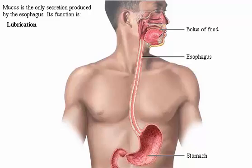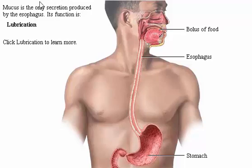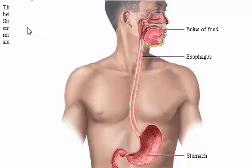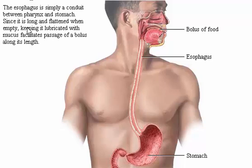Mucus is the only secretion produced by the esophagus. Its function is lubrication. Remember that the esophagus is simply a conduit between the pharynx and stomach — it serves no digestive or absorptive functions. Since it is long and flattened when empty, keeping it lubricated with slippery mucus facilitates passage of a bolus along its length.